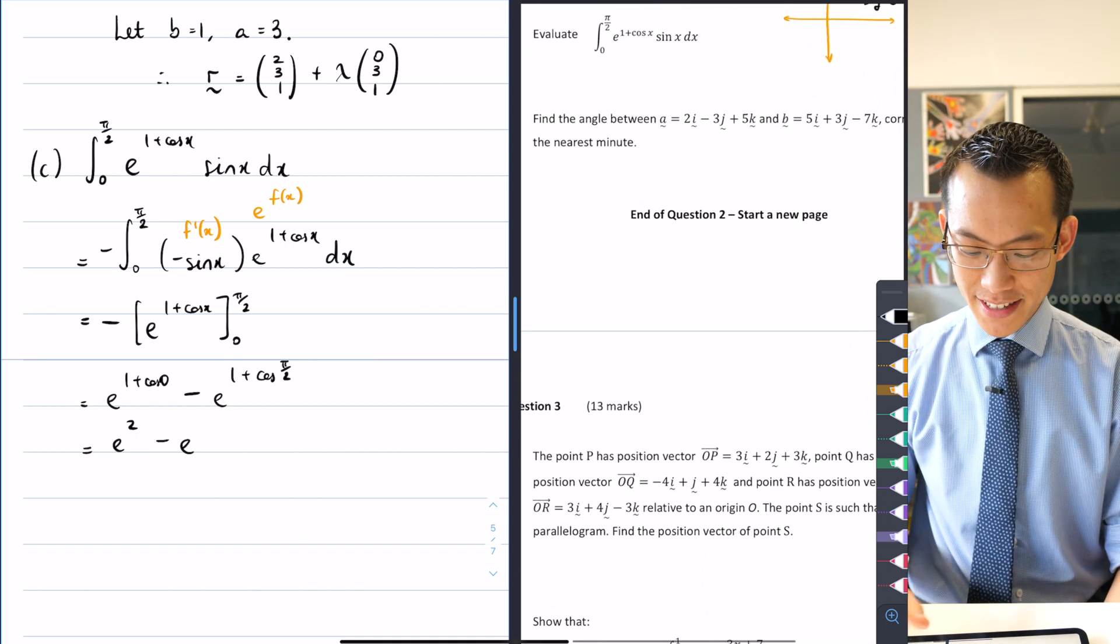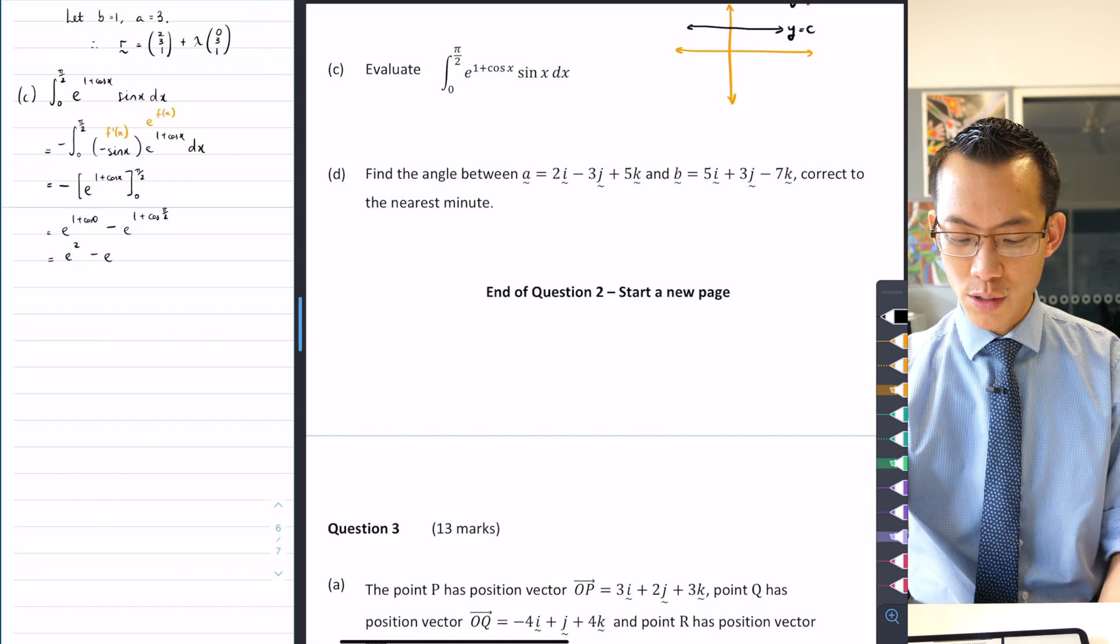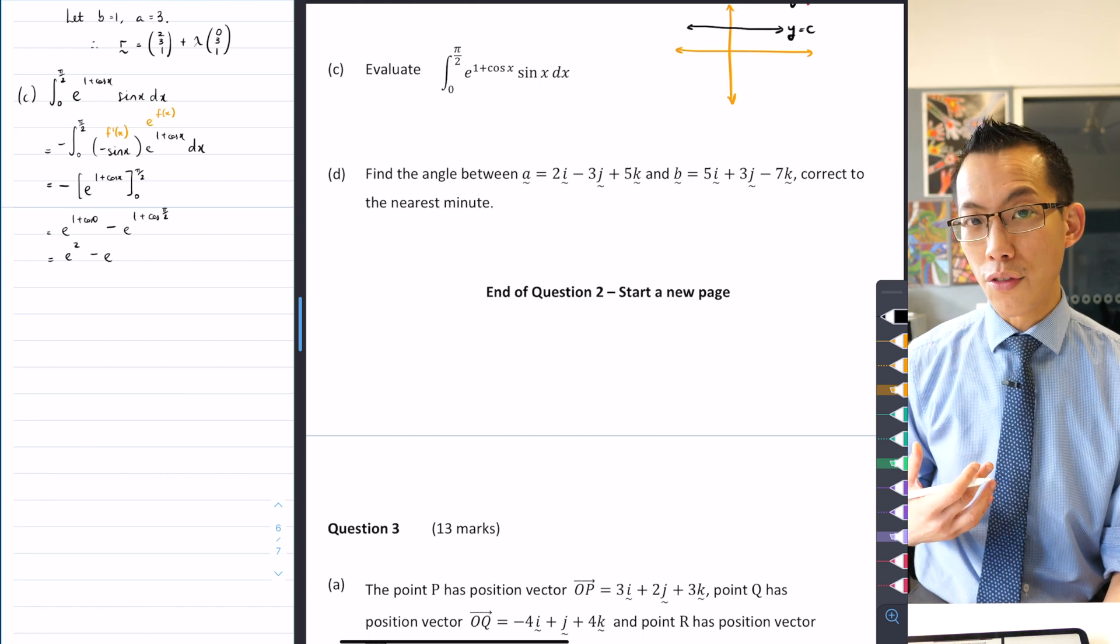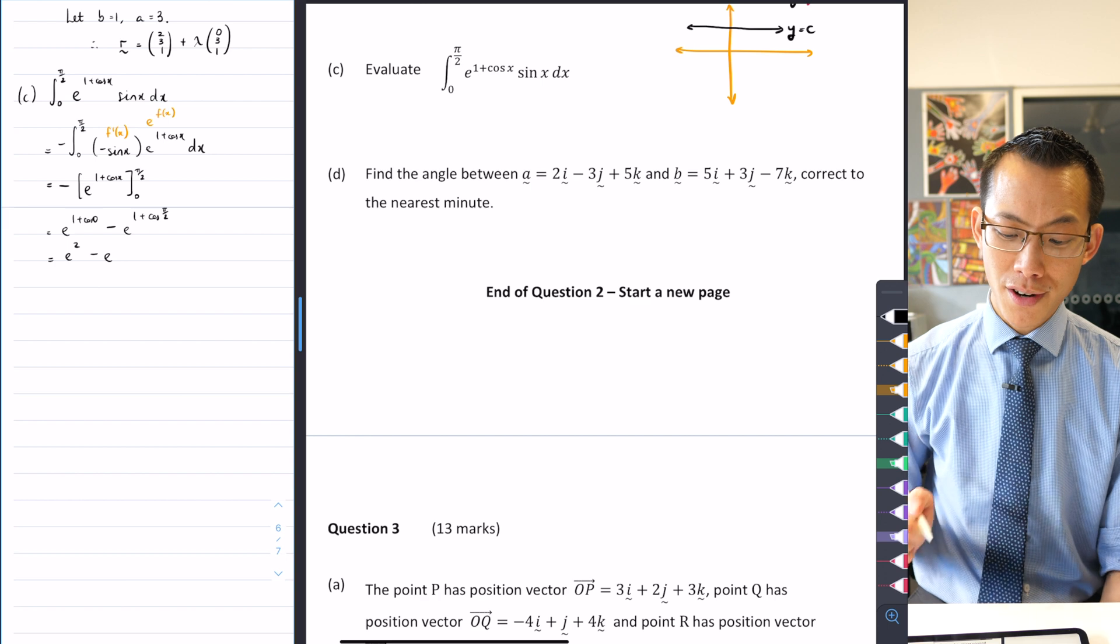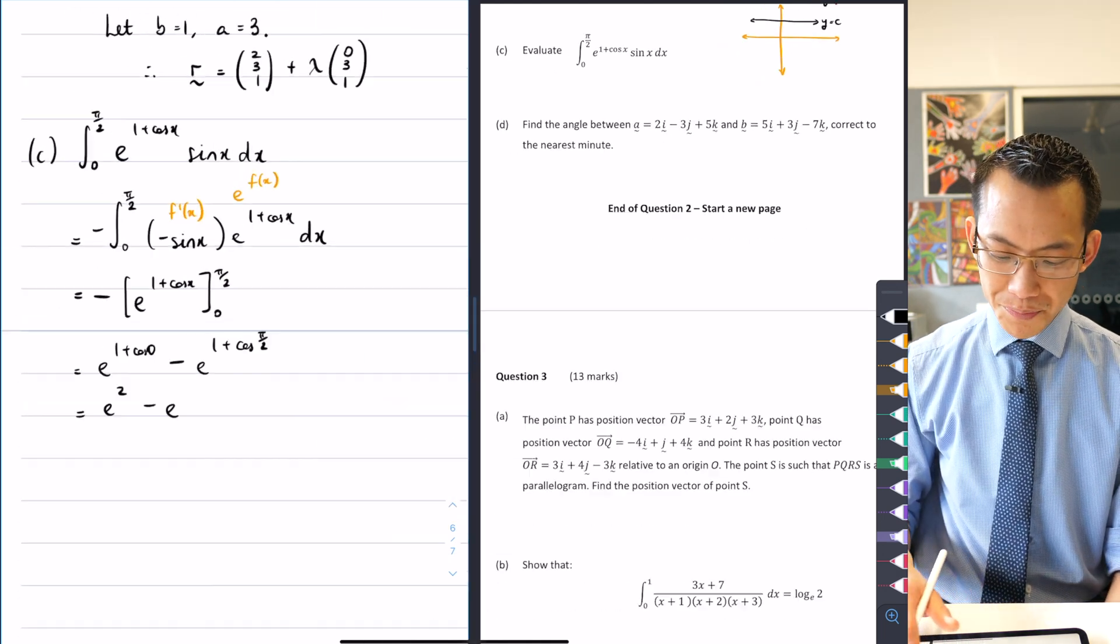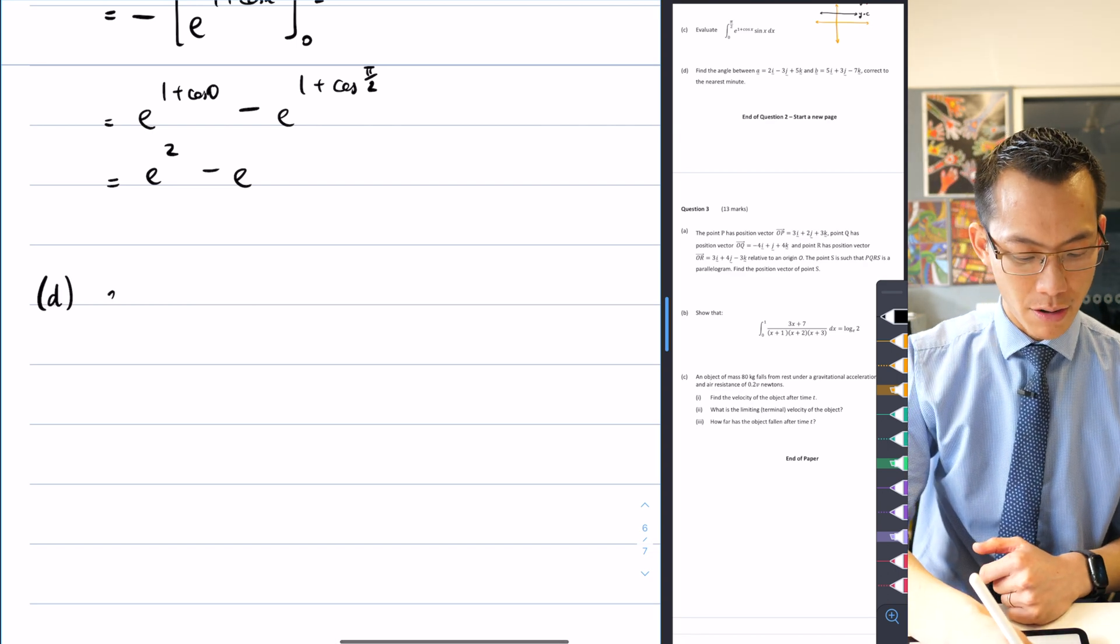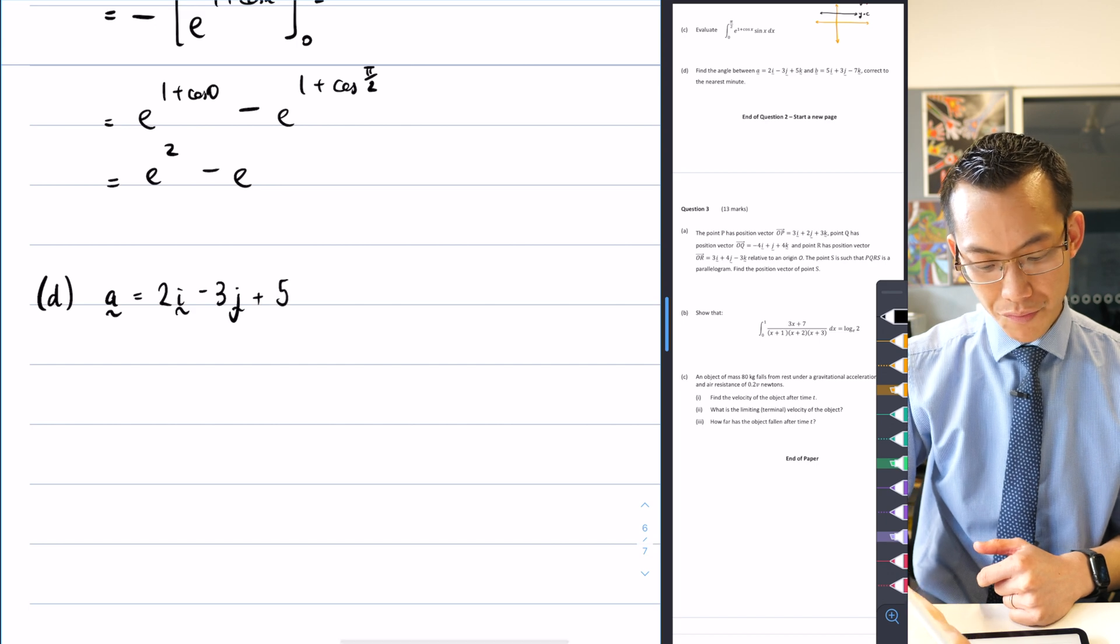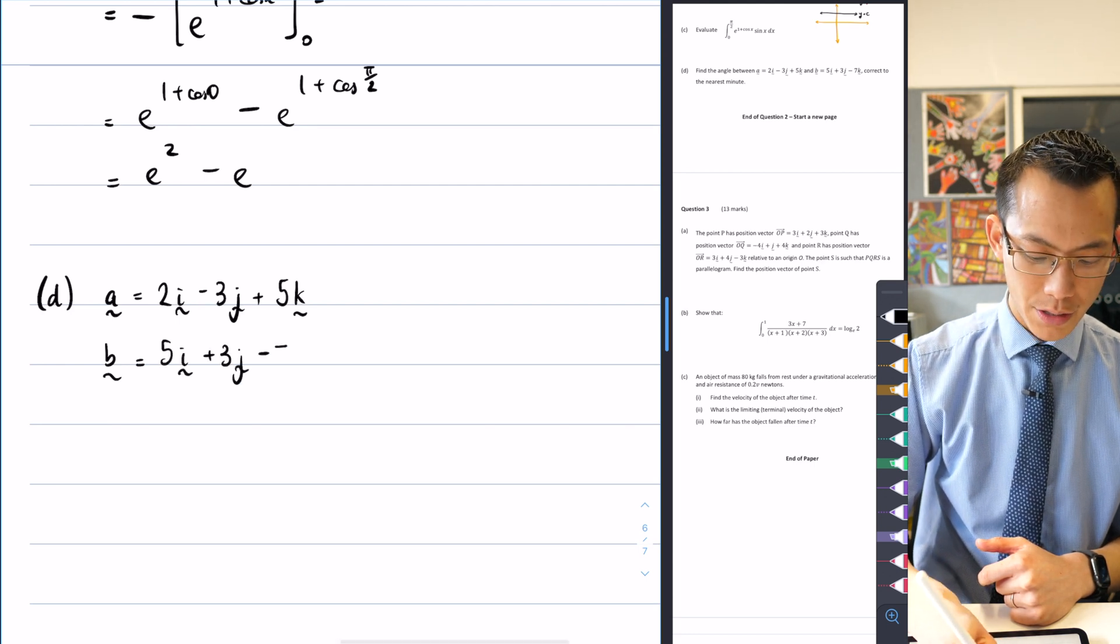Okay. Back into 3D vectors land. What is this question asking us? Find the angle between A and B, given the XYZ components of these two vectors, correct to the nearest minute. Now, just like we saw a couple of brief questions ago, this is going to be the use of the dot product, just a slightly different one. We know that the dot product of 0 gives us two vectors at right angles. These are probably not at right angles, just by looking at the numbers. So we're going to find out what that exact angle is.